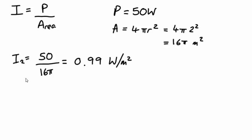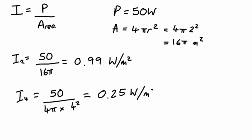So that's the intensity at 2 meters. What if we were 4 meters away instead? Well, let's work that out. The intensity at 4 meters, again, the power output of the light bulb is still 50 watts, but we need to divide that by 4 pi times 4 squared, which gives us 0.25 watts per square meter.